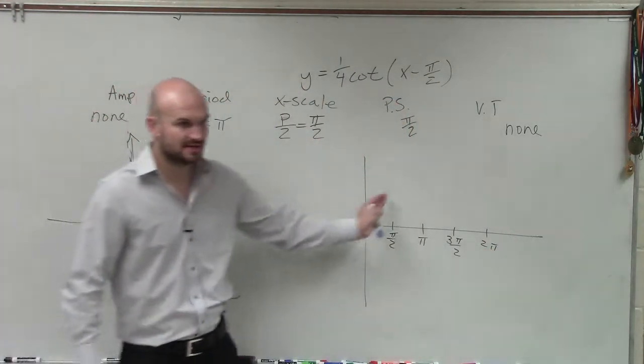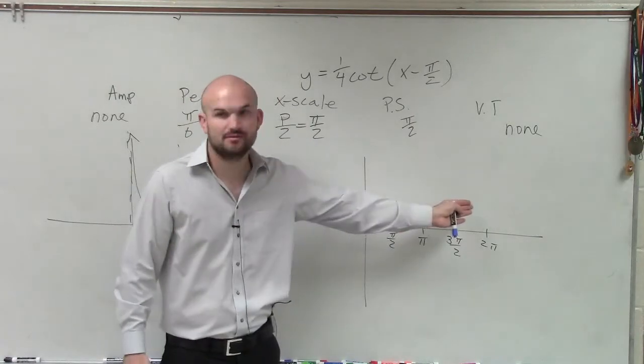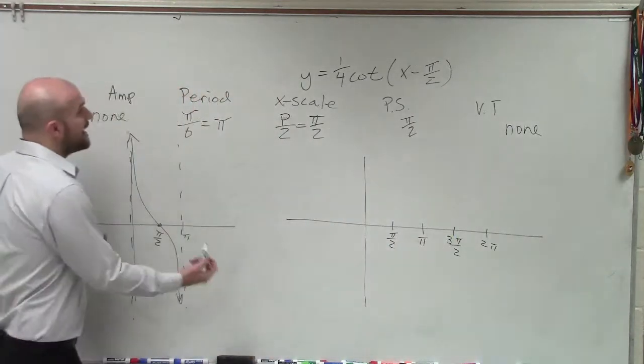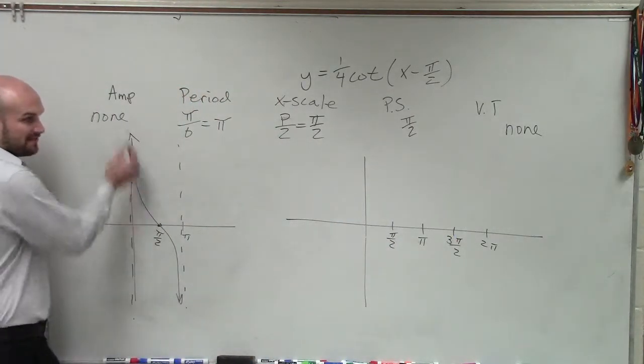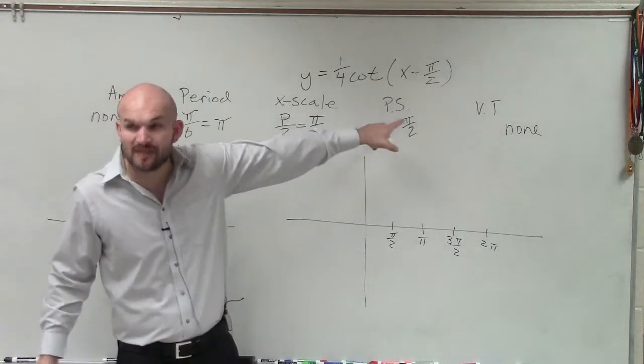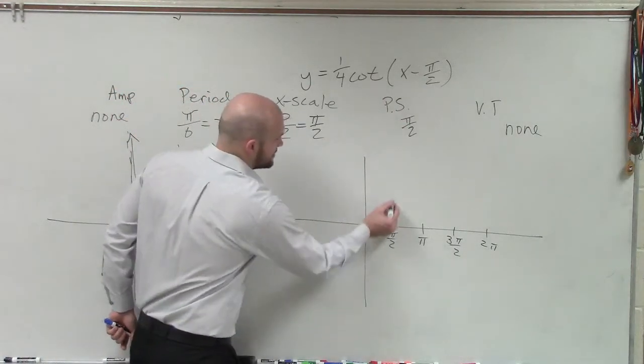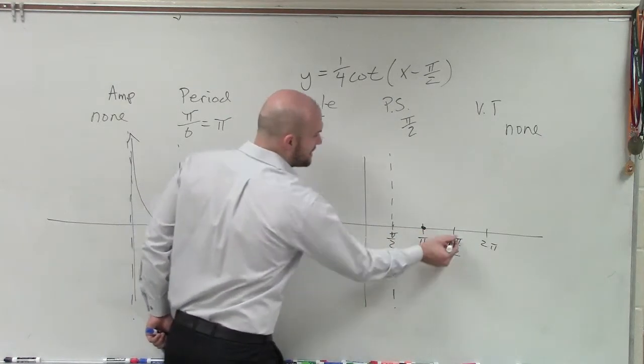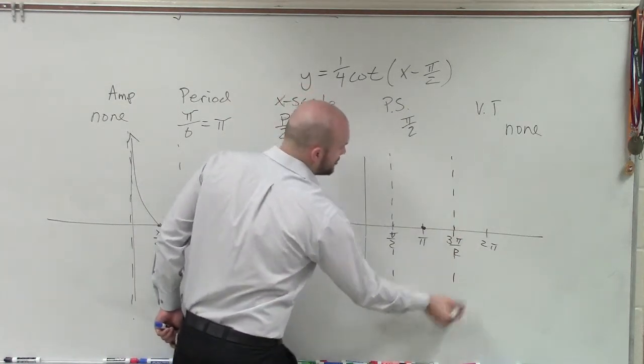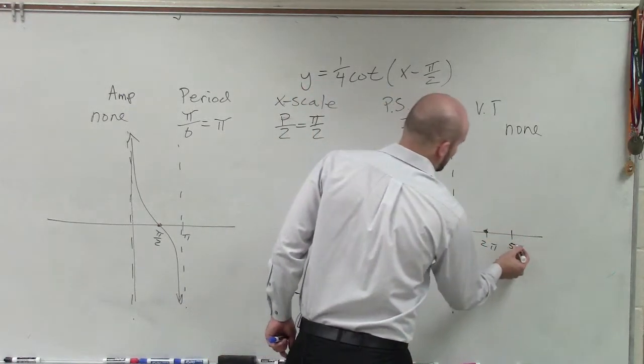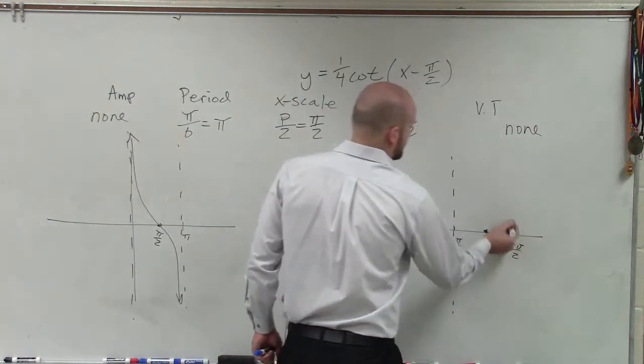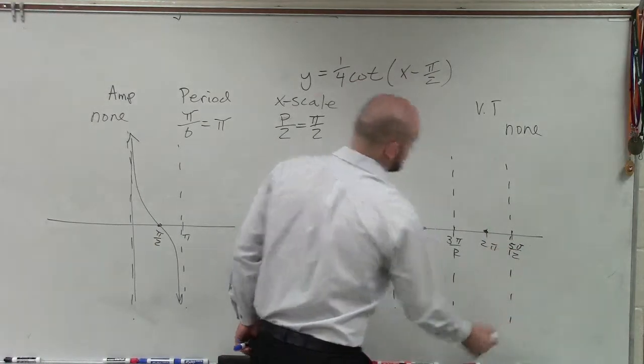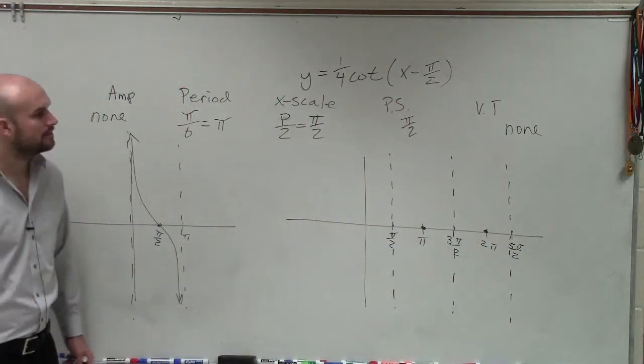Does everybody see my x scale? So x scale is how I'm going to be scaling my graph. Now, rather than starting at 0 with that first asymptote, I'm now going to start at my phase shift with just π halves. So now, that's going to be my first asymptote, that's going to be my x-intercept, asymptote, x-intercept. And let's do one more point, 5π over 2.